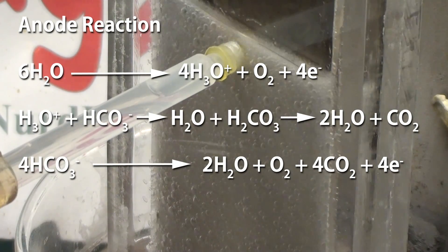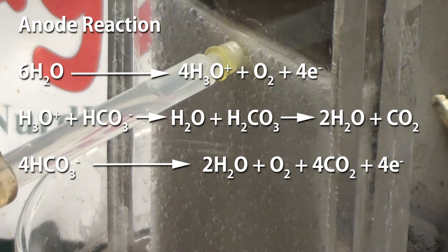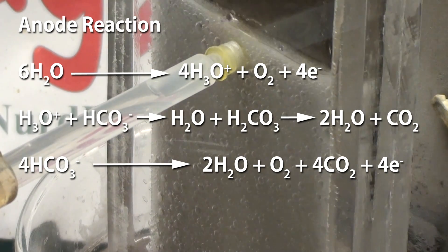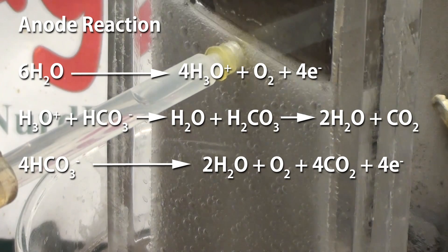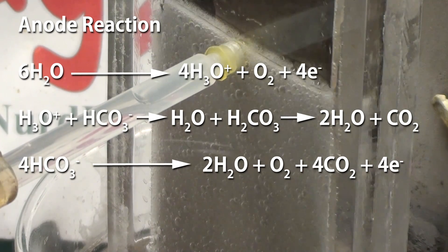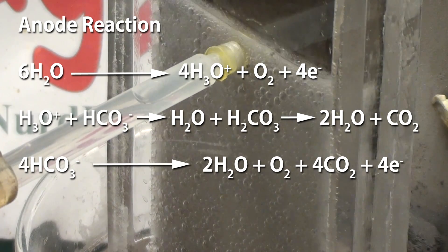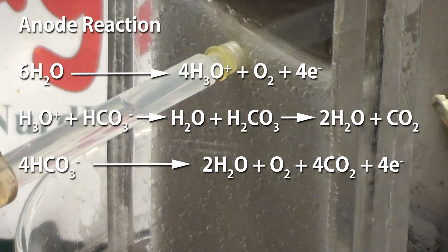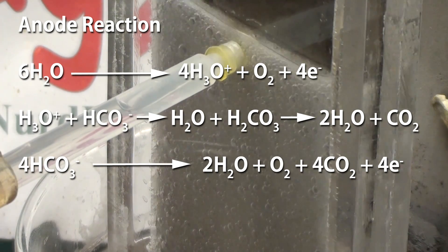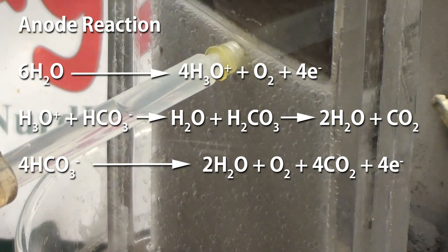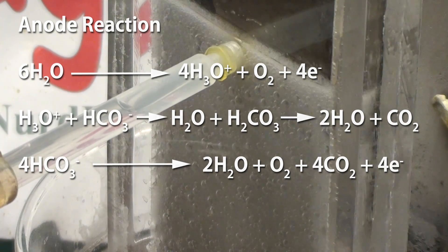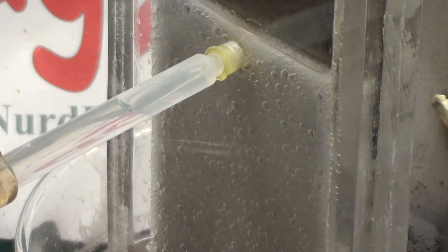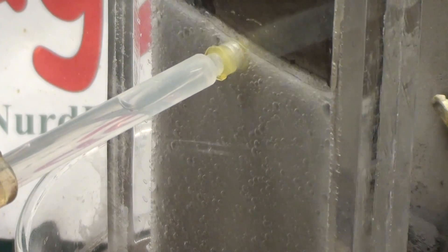Now you may be wondering if the anode reaction produces hydronium ions, which are cations, why don't they diffuse through as well? The answer is they would, but they react with the bicarbonate ions and neutralize them to form carbon dioxide and water. So the pH of the solution remains high and there is never a high enough concentration of hydronium ions to significantly contribute to ion transfer through the membrane.